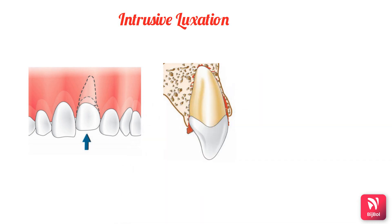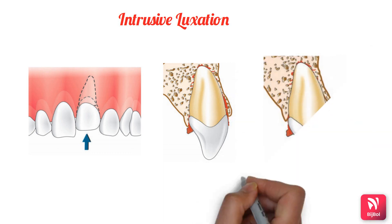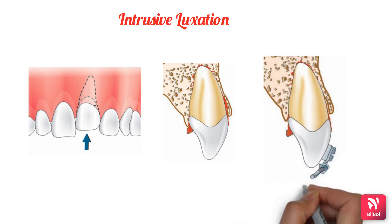In immature teeth, spontaneous re-eruption is usually seen. If re-eruption stops before normal occlusion is attained, orthodontic movement is initiated before the tooth becomes ankylosed.